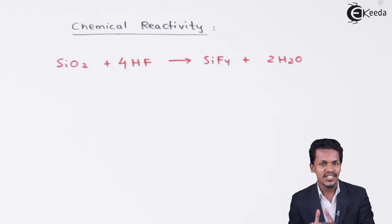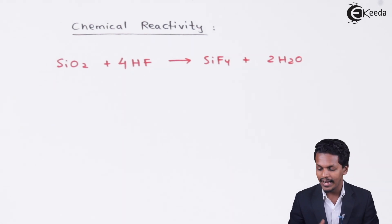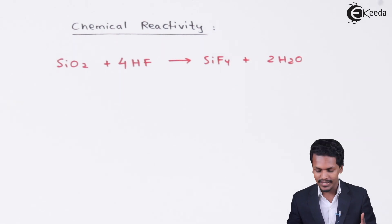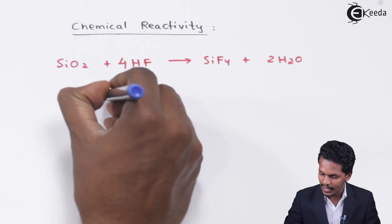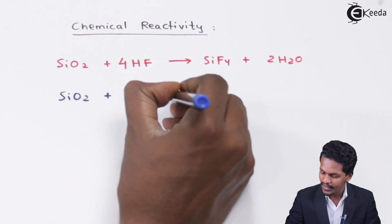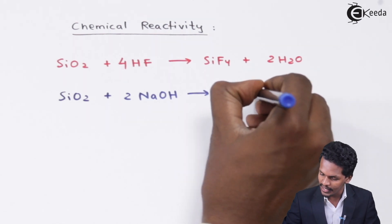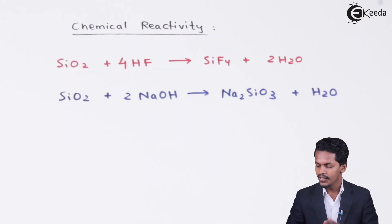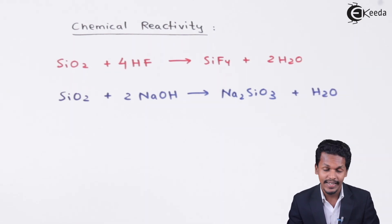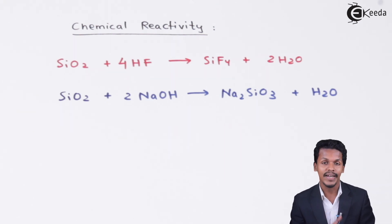When it comes to reaction with base, it has been found that silicon dioxide can be treated with a base like NaOH, and it forms Na2SiO3 plus H2O. These were the chemical properties exhibited by SiO2 or silicon dioxide.